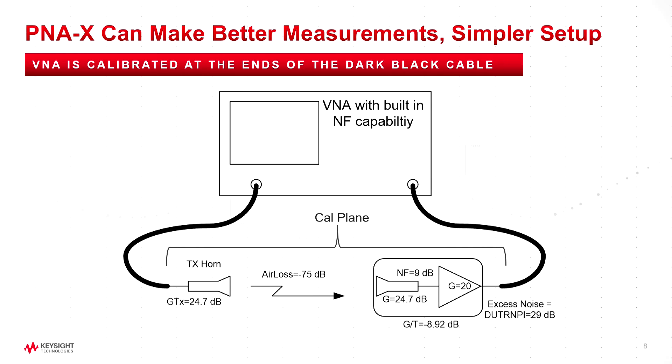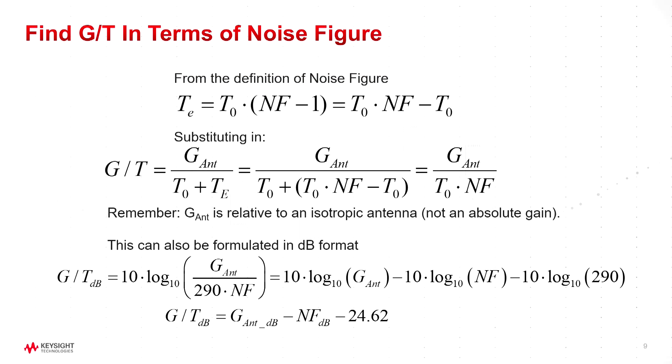And in this example, I take a specific amplifier. I'll call it a 20 dB gain amplifier with a 9 dB noise figure and a 24 dB of mechanical gain in the antenna. And if you do the computation, it gives us a minus 8.92 dB G/T. And here's the computation right here. I won't go through everything here. But just the very simple way of measuring is it's the gain of the antenna, the directivity of the antenna, minus the noise figure of the amplifier. And this 24.62 is a magic number. It's the hotness of T0 expressed in dB.